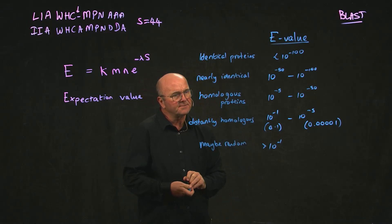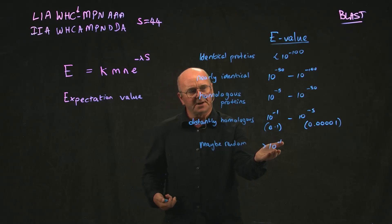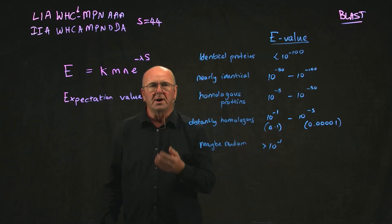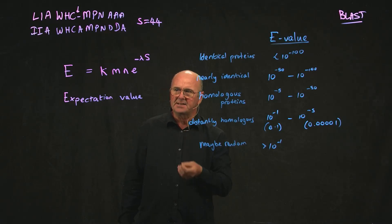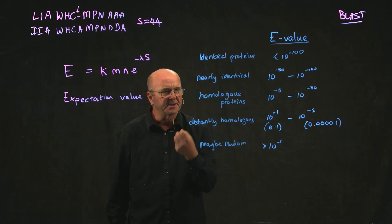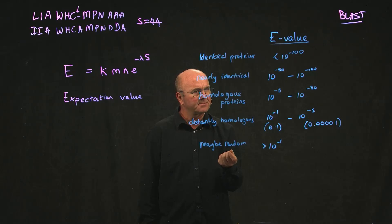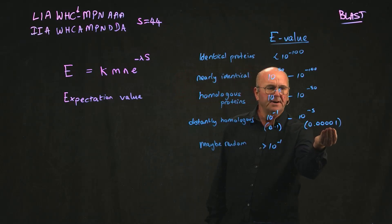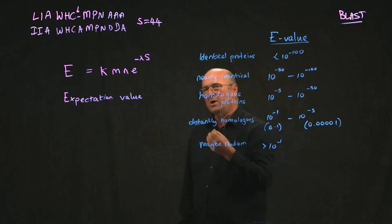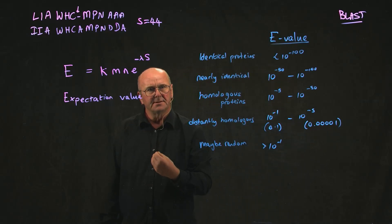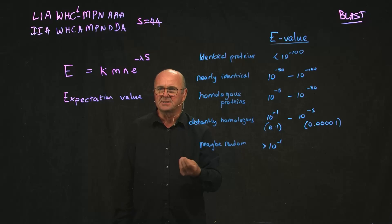Essentially what that means, if you have an e value of 10 to the minus 1, it means that about one alignment in 10 is going to be random based on the length of the query, the length of the database, and the score that you received. If you have an e value of about 10 to the minus 5, it means about one alignment in 10,000 is going to be random based on the length of the query, the length of the database, and the score that you received.